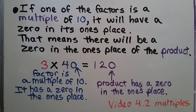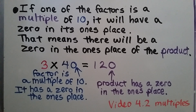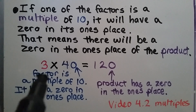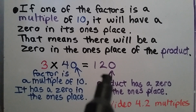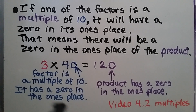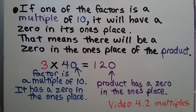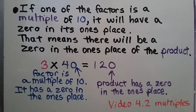If one of the factors is a multiple of 10, it will have a zero in its ones place. That means there will also be a zero in the ones place of the product. For example, 3 times 40 equals 120 — the factor 40 has a zero in the ones place, and so does the product 120.